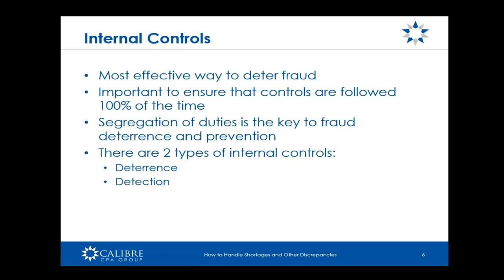Segregation of duties is the key control related to fraud deterrence and prevention. It's much more difficult for someone to commit fraud if they have to have someone else involved — it takes a lot of nerve to ask the person sitting next to you to join a plot to steal money from the organization. There are two types of controls: deterrence controls, which hopefully deter someone from committing fraud; and detection controls, which determine how quickly we can detect that fraud once it occurs.